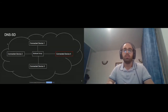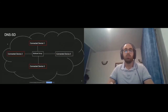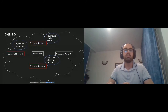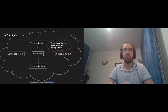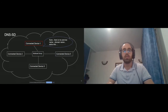Device number four wants to find available services in the network, so it sends a query asking for available services. Each device responds with its services: a printing service from device one, a web service from device two, and a streaming service from device three. Device four selects the printing service and queries device one for additional information to establish the connection. Device one, the provider of the printing service, responds with everything required to use its service.